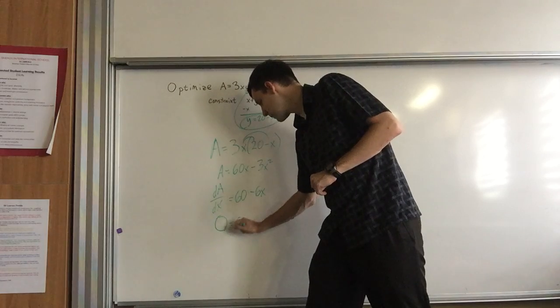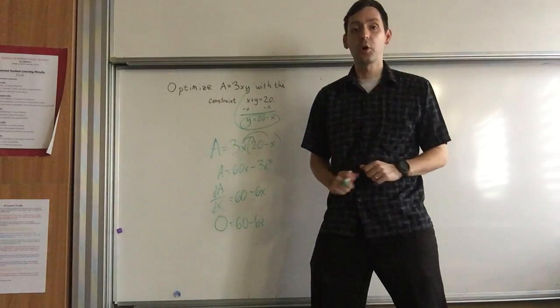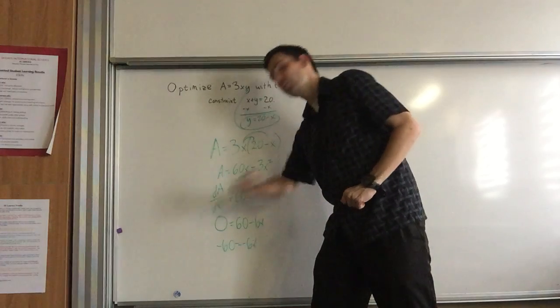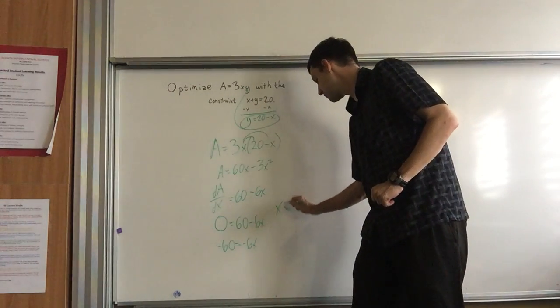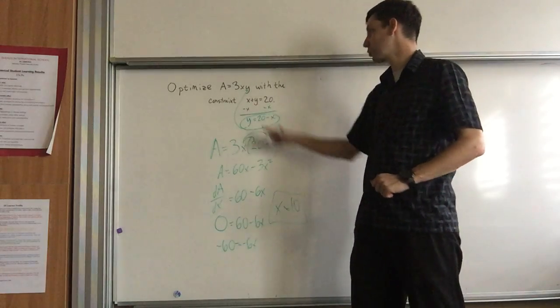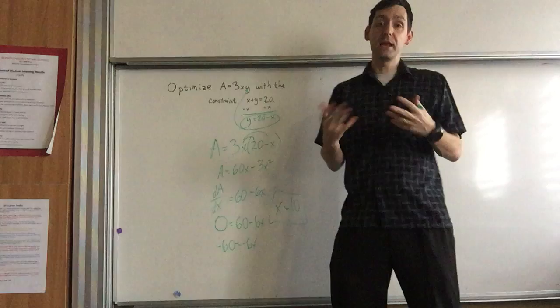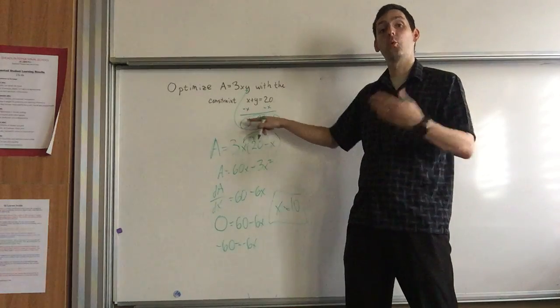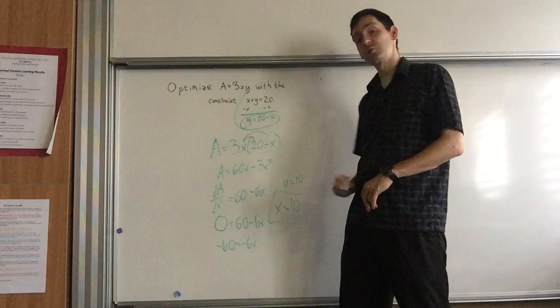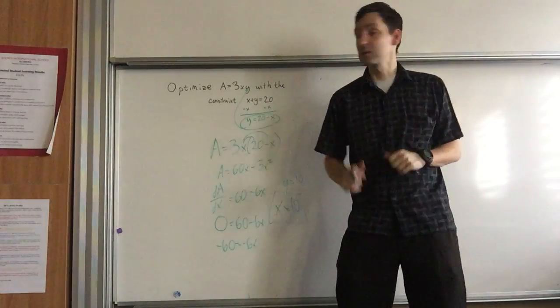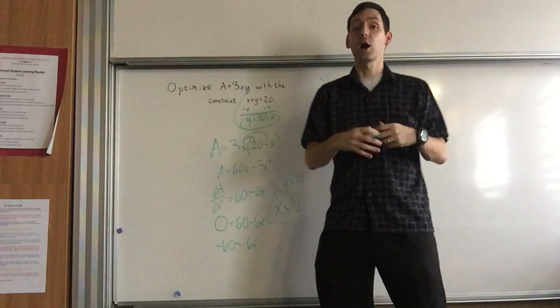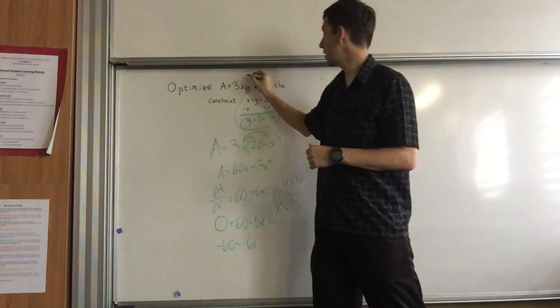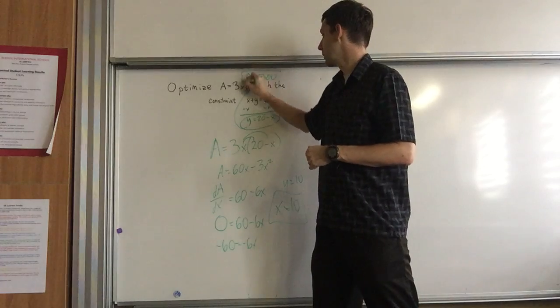0 = 60 - 6x. At this point you should be able to subtract the 60 to the other side, that'll give me -60 = -6x. Divide both sides by -6 and I get that x = 10. So at x = 10, A will be optimized. Now depending on what you need from there, you could solve for y. I could put x = 10 into this function, 20 - 10, so y = 10. I could find A now that I have x and y, because A = 3 times x times y. So what is the optimal value for A? Well it is 3 times 10 times 10. 10 times 10 is 100 times 3 is 300, so the optimal value of A is 300.